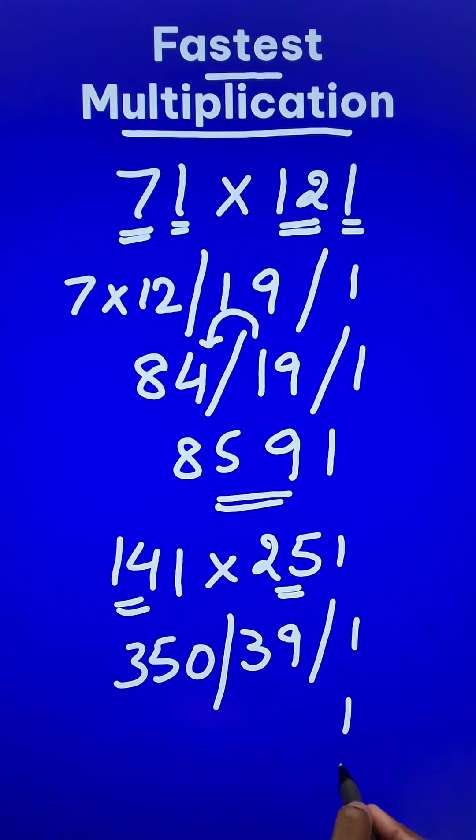Now start writing the unit digit again: 1. Then we have the 39, which means 9 and a 3 carried. So 350 plus 3 is 353, and here you have the required answer: 35391. That's perfect.